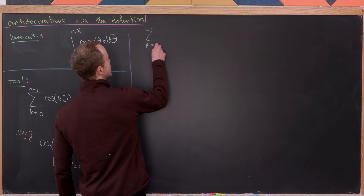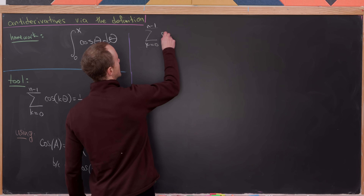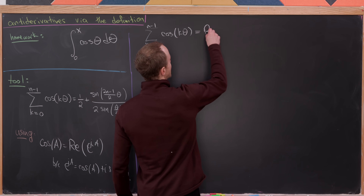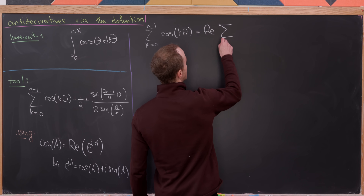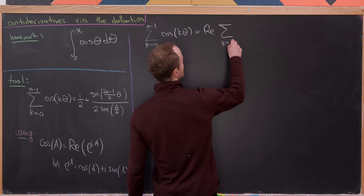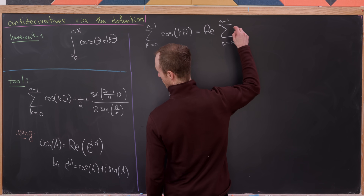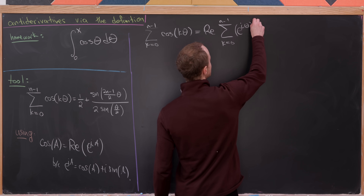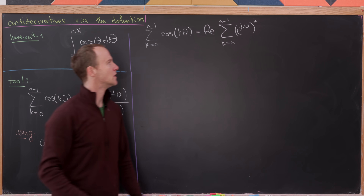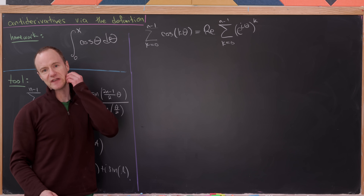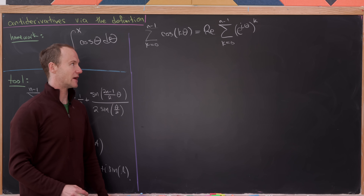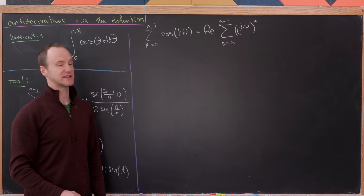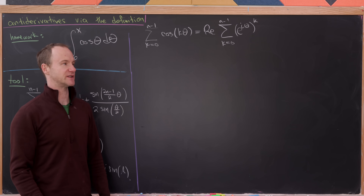We want to find the sum as k goes from zero to n minus one of cosine(kθ). That's going to be the real part of the sum as k goes from zero to n minus one of e^{iθ} raised to the k power. I used exponent rules to bring that k outside so that this looks like a finite geometric series.